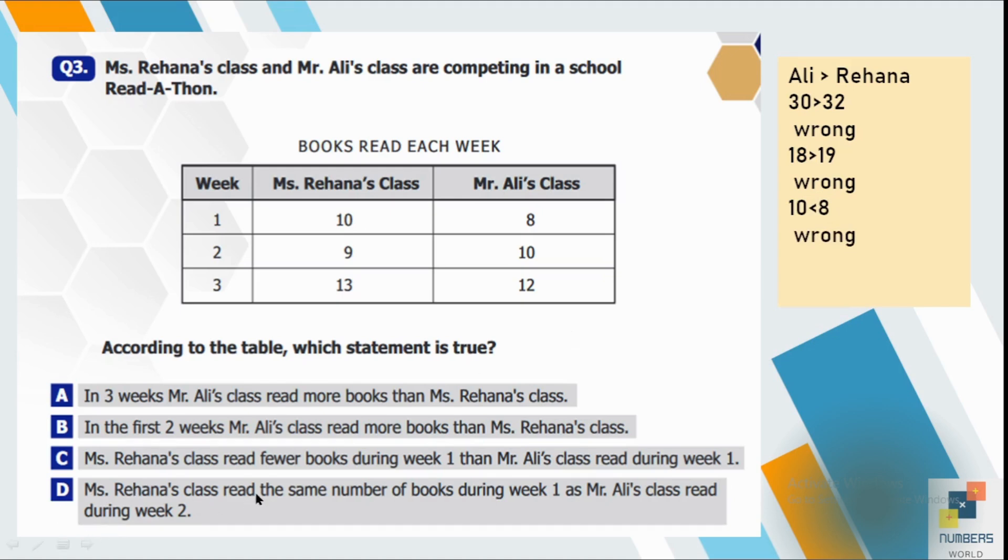So option D. Ms. Rihanna's class read the same number of books during week 1 as Mr. Ali's class read during week 2. So you can clearly see the number of books read by Ms. Rihanna's class in week 1 and the number of the books read by Mr. Ali's class in week 2 are same. So 10 is equal to 10. So that's why D is our correct option.